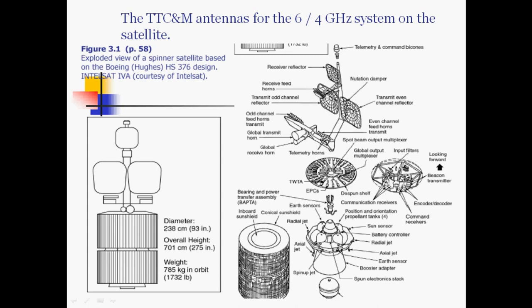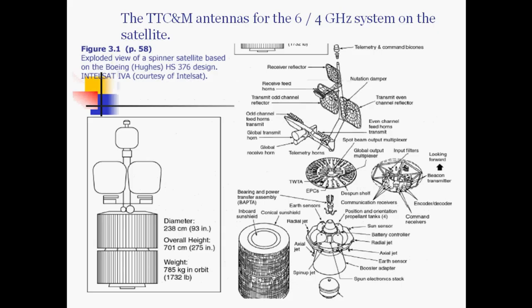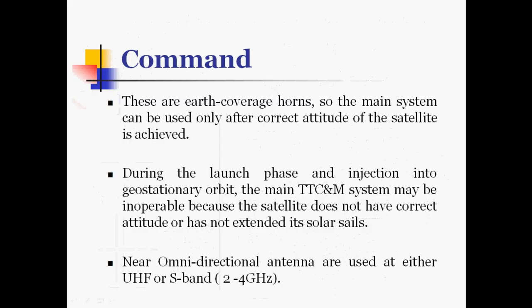These are the different electronic equipment components at the satellite end. These horn antennas are the telemetry and command horns, which are earth coverage horns. The main system can be used only after the correct attitude of the satellite is achieved, during the launch phase and injection into the geostationary orbit.